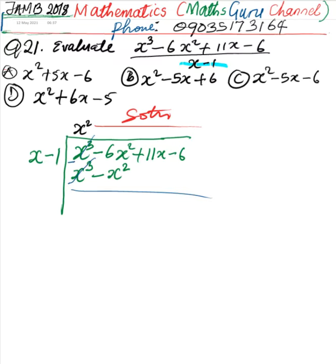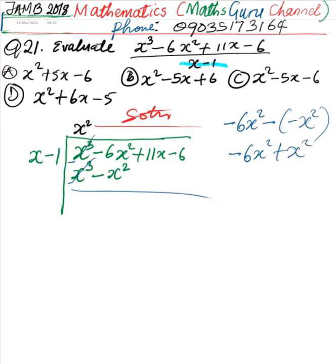Then negative 6x squared minus negative x squared. That is negative 6x squared plus x squared, because negative times negative gives us positive. This will be equal to negative 5x squared. So we have negative 5x squared here.